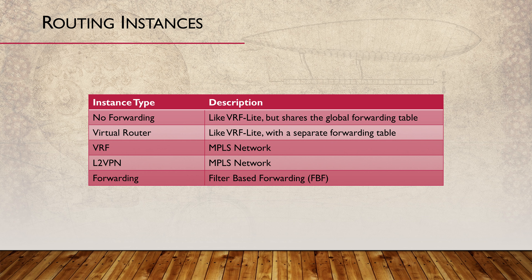The forwarding type is used with filter-based forwarding, which you may know by the name Policy Based Routing. The idea is that we use firewall filters to match certain traffic and then apply different routing rules. This is a clever way of bypassing the regular routing table.